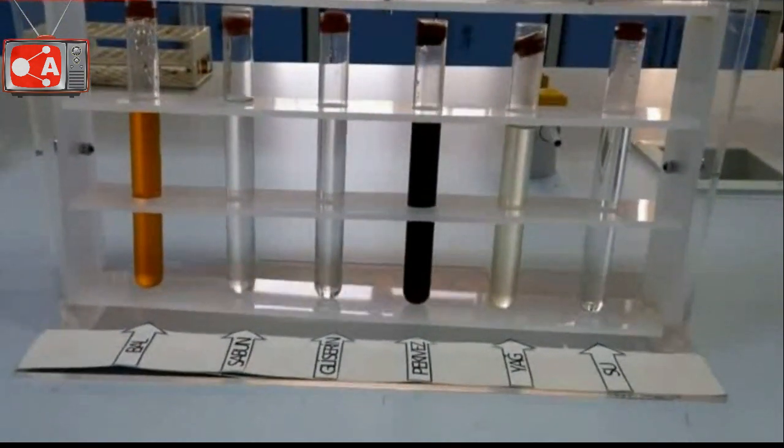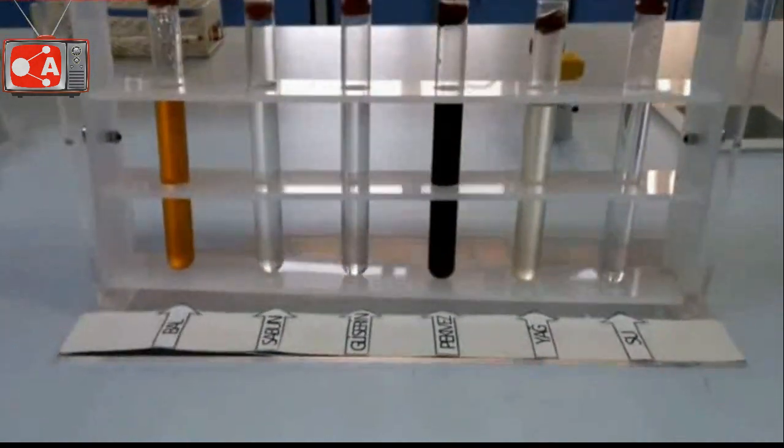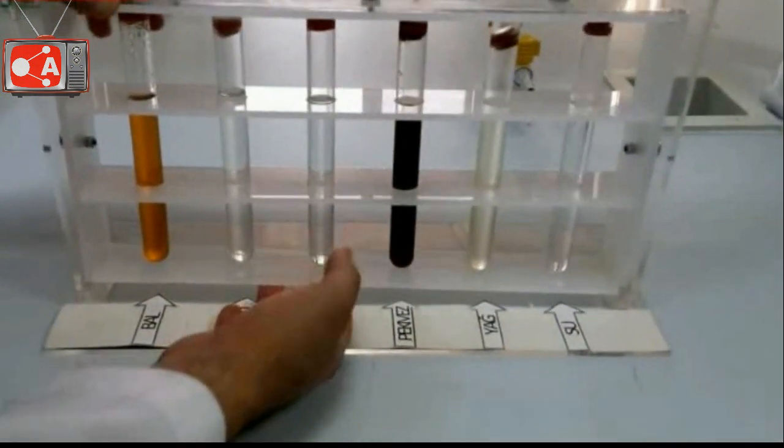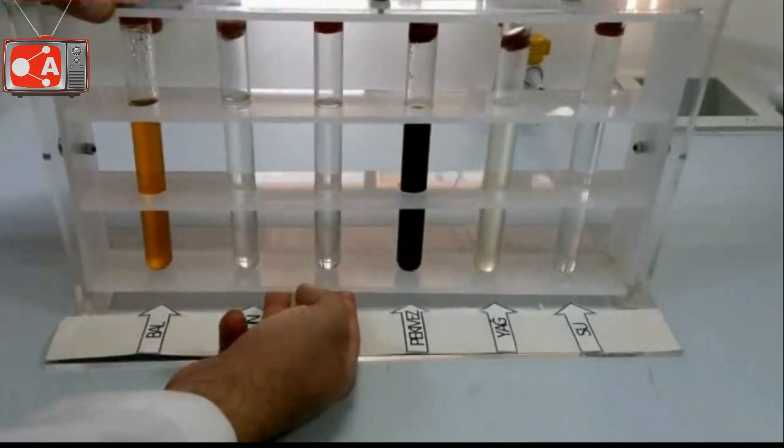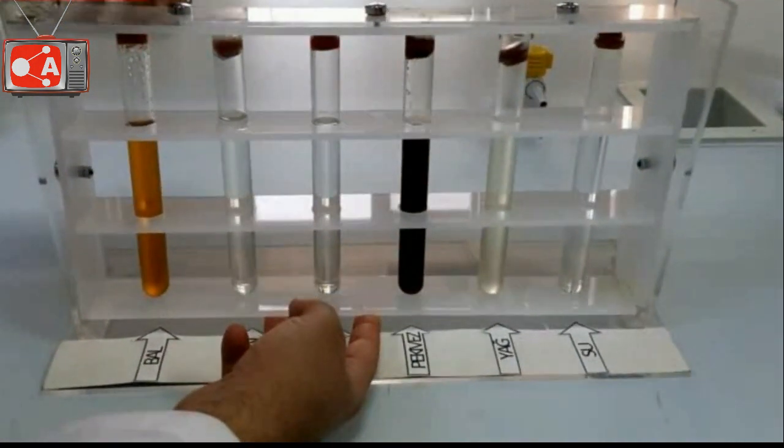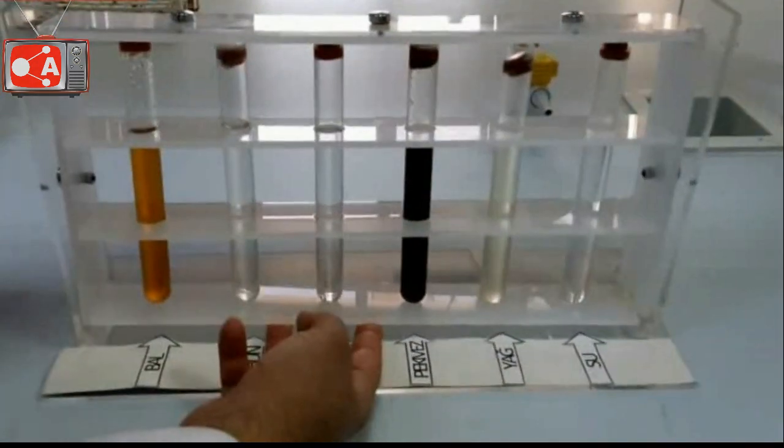After a while, we will turn the liquids upside down and we will check how much time it takes for air bubbles to go from bottom to top in each test tube. The faster the air bubbles in the test tube go up, the more viscous the liquid will be.